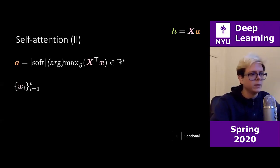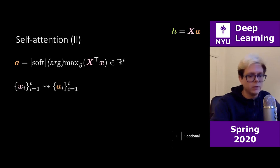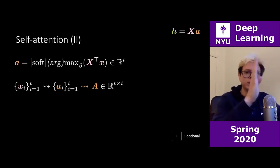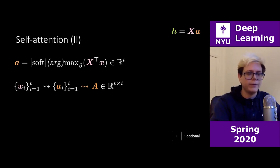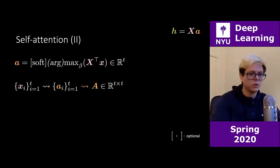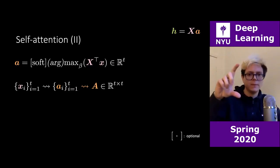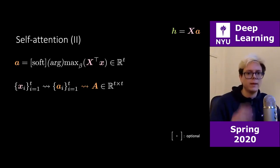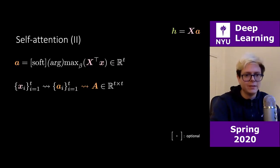Since we have a set of x's, this implies we have a set of a's — for every x you get an a. If you stack all these a vectors one after another, you get capital A. Capital A has height t, because each lowercase a has size t (t rows in X^T), and you stack t of them because you have t x's.